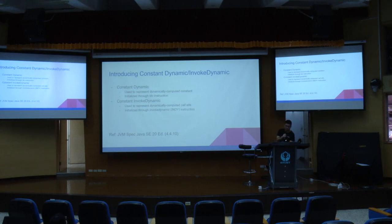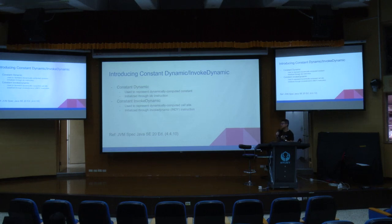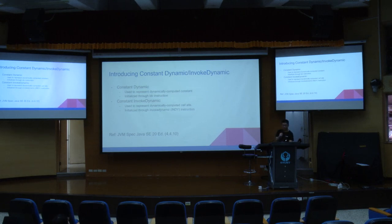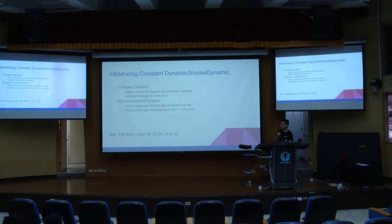Today we are going to introduce constant dynamic and invoke dynamic first. These are two different constants that exist in the Java class file, and they are different because they have different uses for validation at runtime. First, constant dynamic is used to represent dynamically computed constants, like integer, float, or string. It is initialized through the LDC instruction. And invoke dynamic is used to represent a dynamically computed call site, and it is initialized through invoke dynamic — in short, Indy — which is an instruction.